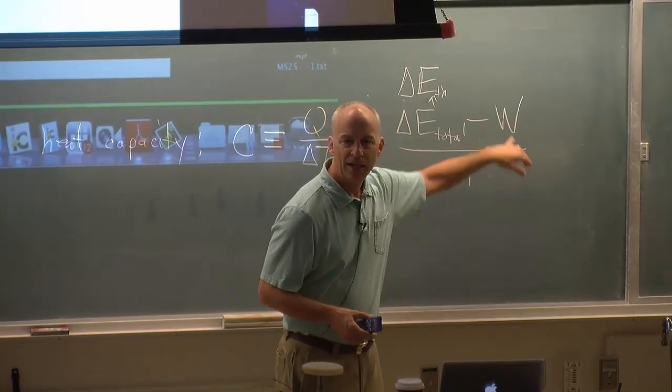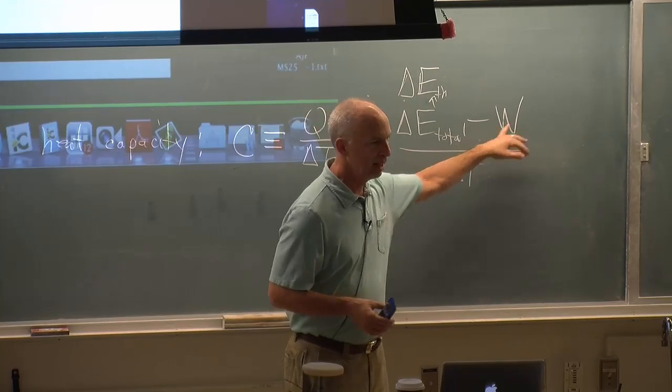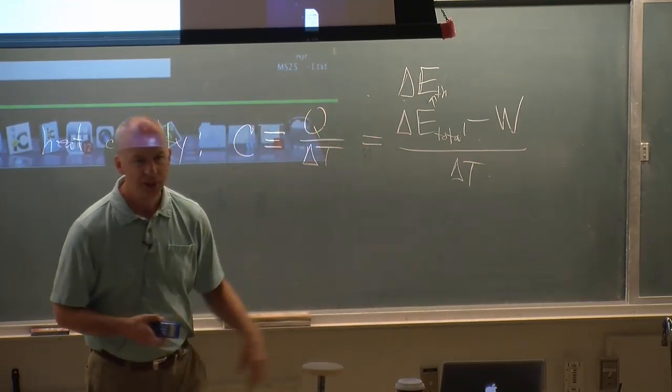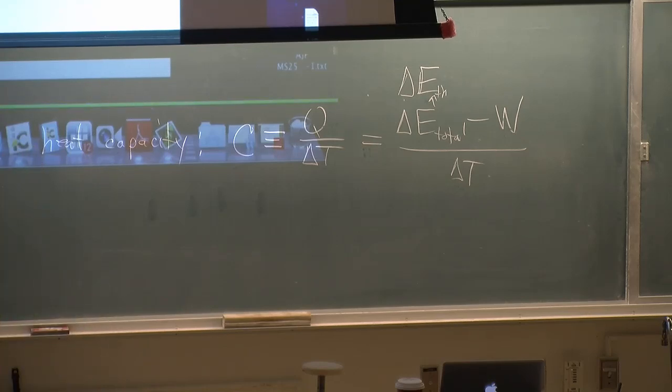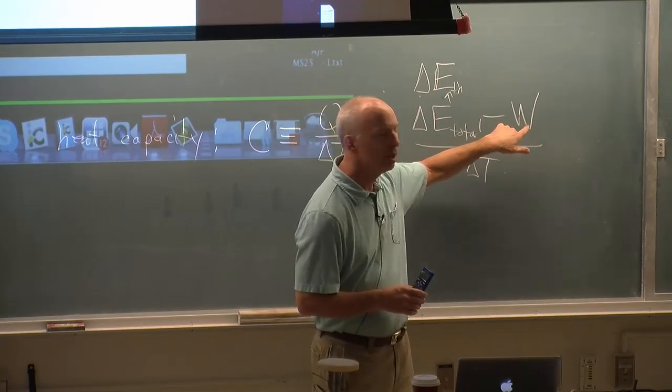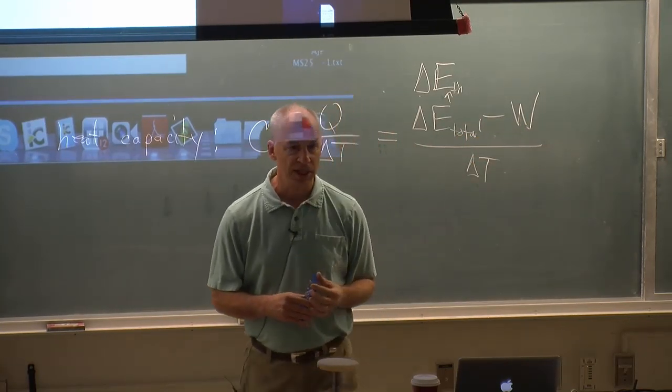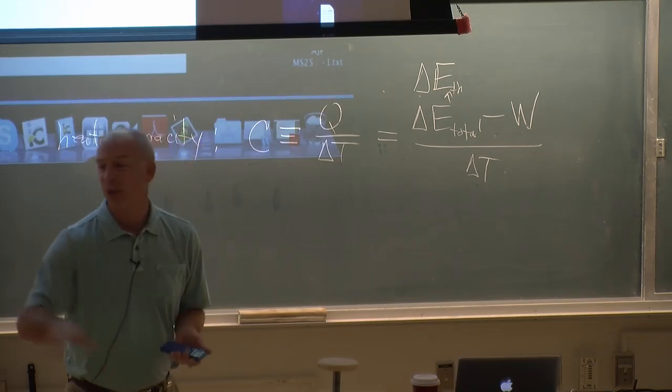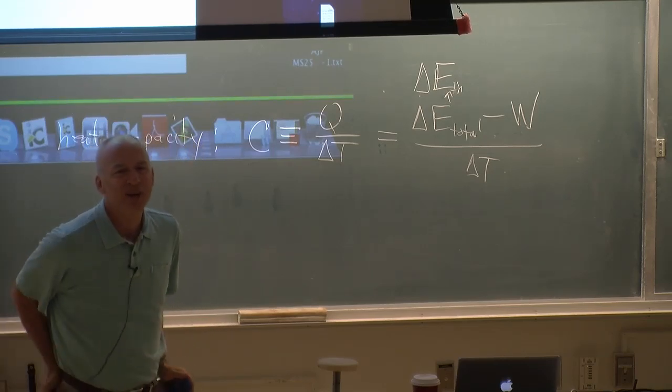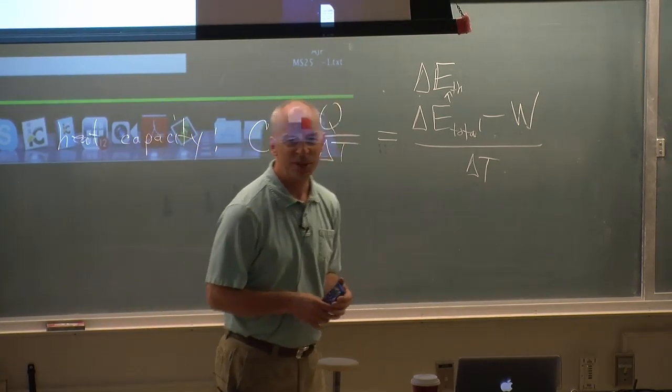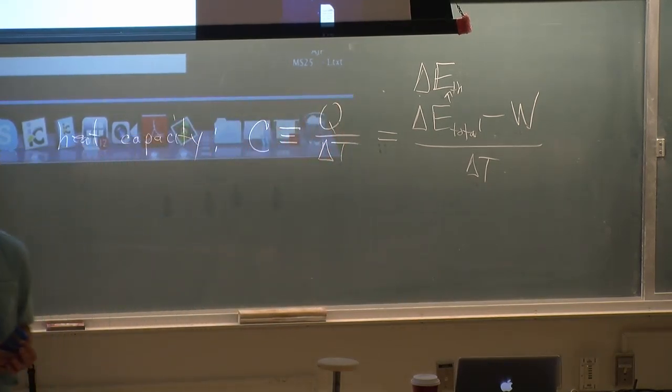And one of them has a W that's negative. And the negative of a negative is a positive. So one of them has Q bigger. The one at constant pressure has work coming out and so needs more heat. That's the less physical way of thinking about it. We had a perfectly good physical explanation of what's going on. This is a little bit more of a mathematical explanation.